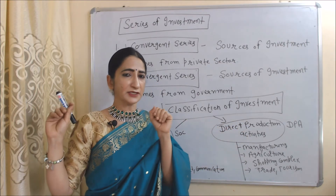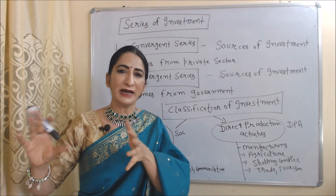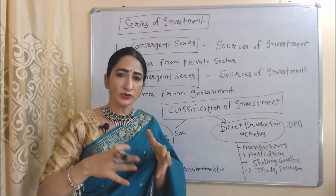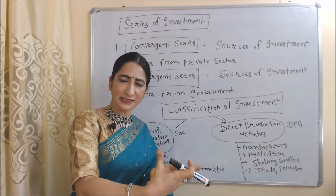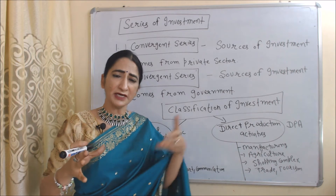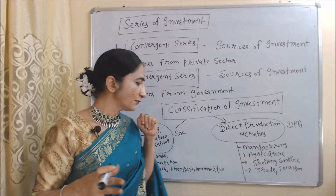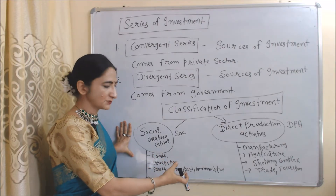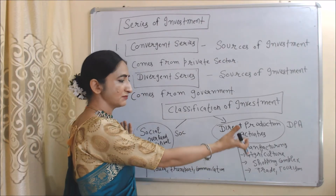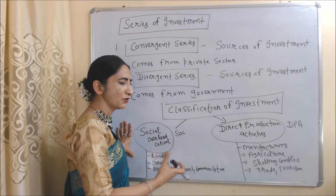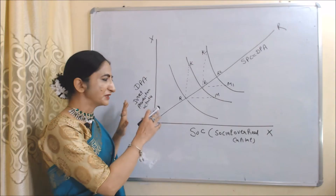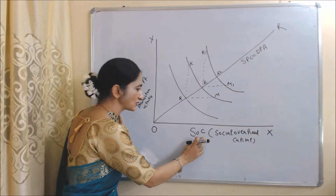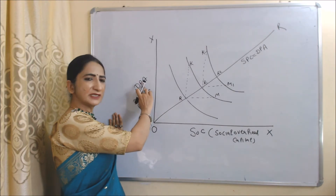This theory talks about unbalanced growth, not balanced growth. In the case of unbalanced growth, we need to invest in leading sectors, and eventually investment in leading sectors will lead to investment in other sectors. For example, investment on roads, irrigation, power, transportation, and communication will eventually lead to investment in manufacturing, agriculture, shopping complexes, trade and tourism. Now, with the help of a diagram, we will see how investment on SOC will lead to investment in DPA.